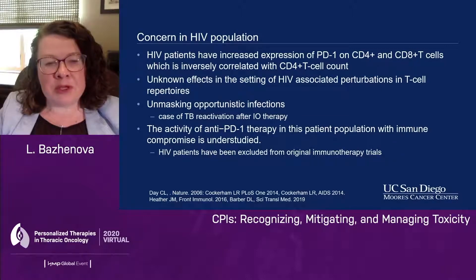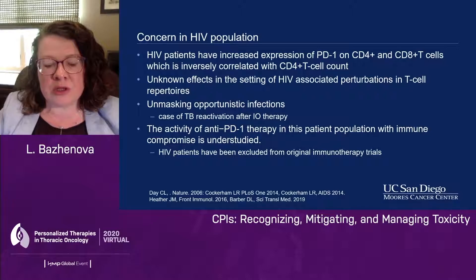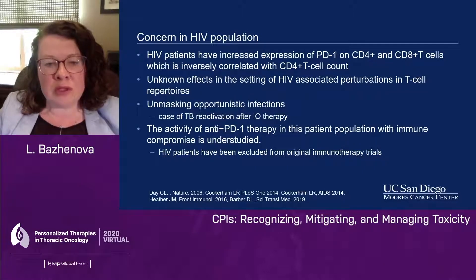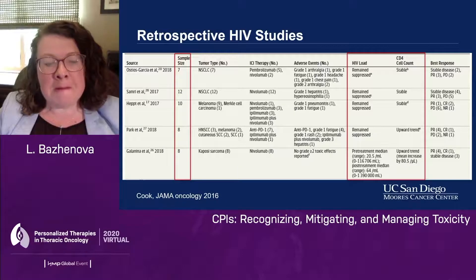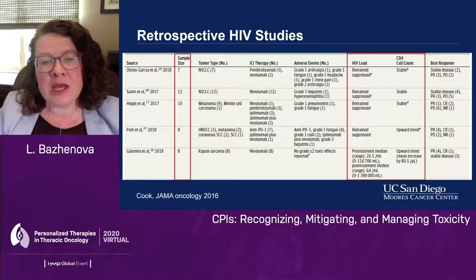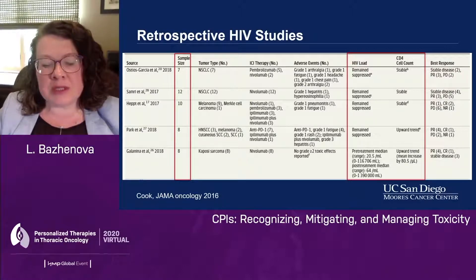HIV is a very special population. We initially had concerns about using immunotherapy in patients with HIV because they already have abnormalities in the immune system, and we questioned whether immunotherapy would even work. There was also a case of TB reactivation after immunotherapy that gave everybody pause. The available retrospective data — though small, single-digit patient numbers — reassuringly showed that HIV viral load remained suppressed, CD4 count was stable, and we actually saw some responses in those patients.